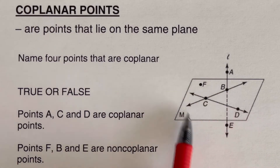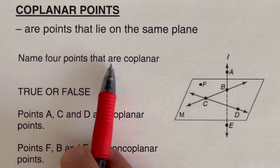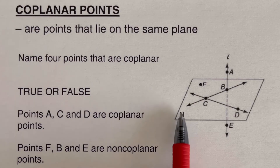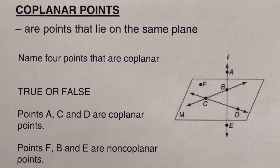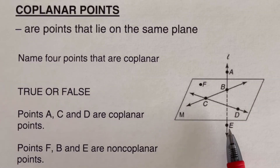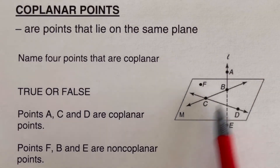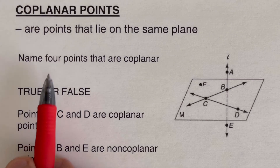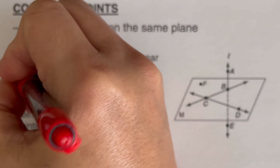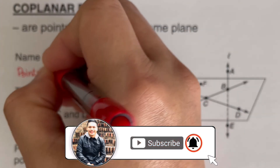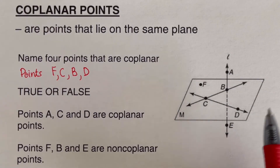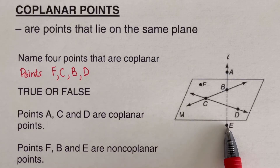Given plane m, name four coplanar points. Think of it as a piece of paper with dots on it. Point a is above the plane and point e is below the plane, so neither is sitting on it. The four coplanar points are f, c, b, and d. Points a and e are not on the plane.